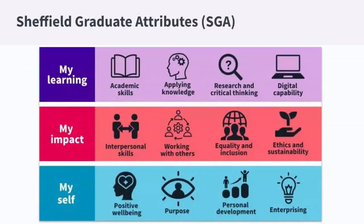These are the 12 Sheffield Graduate Attributes. As you can see, some of them are very similar to the ones you put in the chat — sustainability is there, working with others, the group work thing, digital capability, which is similar to digital fluency. Some of the wording is a bit different but they are very similar graduate attributes. Here at the University of Sheffield those graduate attributes are one or two words — some of them are very abstract. Purpose could be loads of things; enterprising could be loads of things. Something that is good because you can include many things, but bad because it's very difficult to understand.